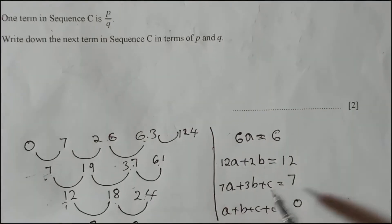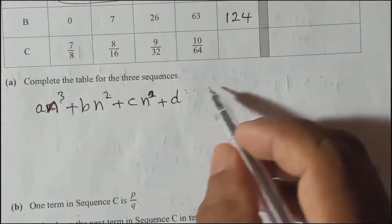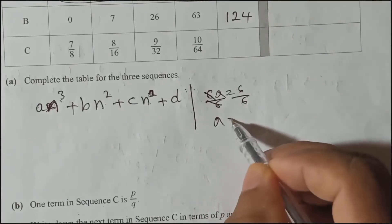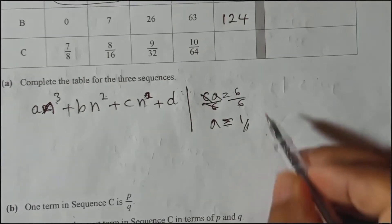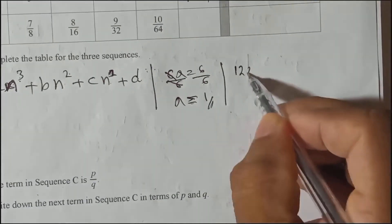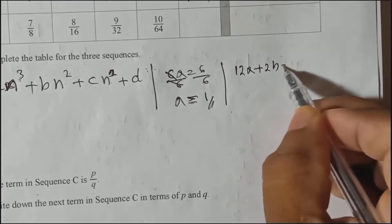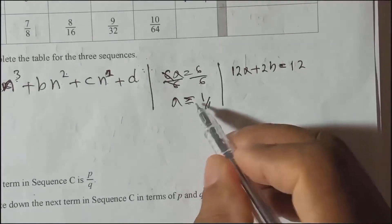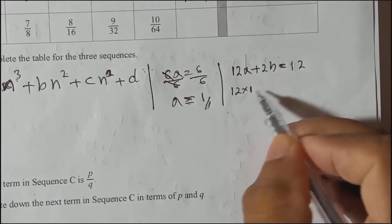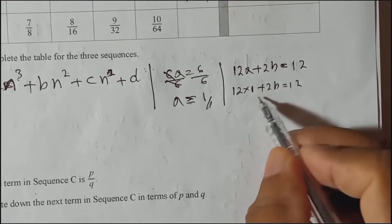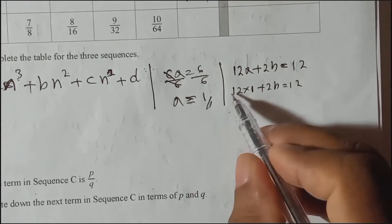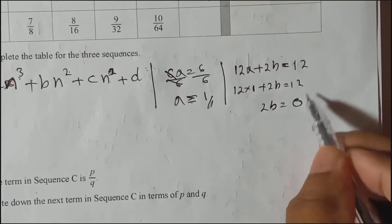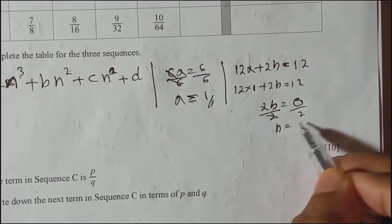First: 6a = 6, so dividing by 6, a = 1. Next: 12a + 2b = 12. Since a = 1, we get 12(1) + 2b = 12, so 12 + 2b = 12, meaning 2b = 0, therefore b = 0.